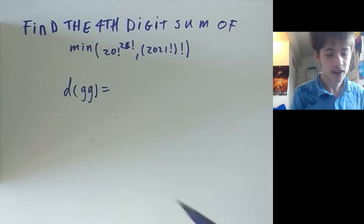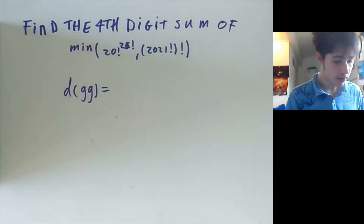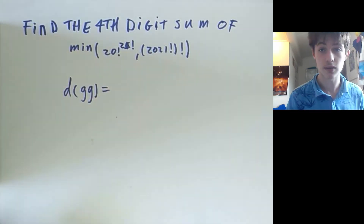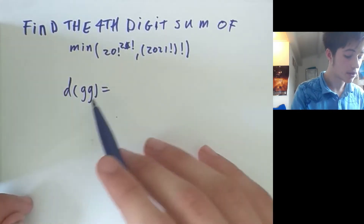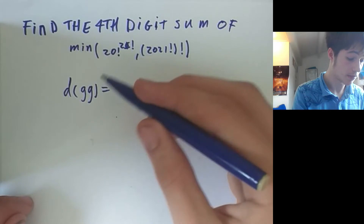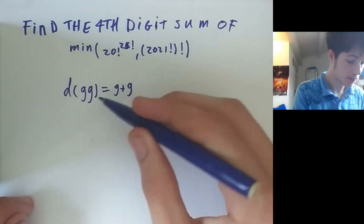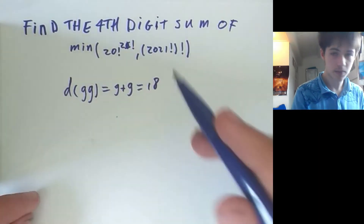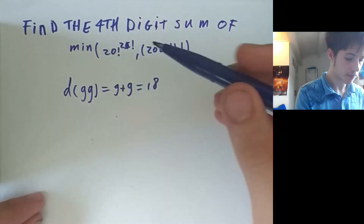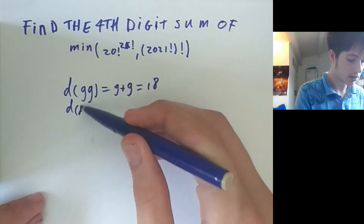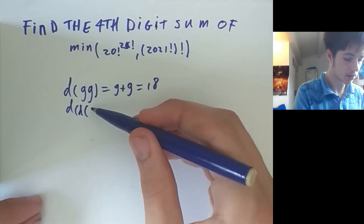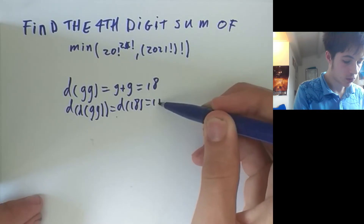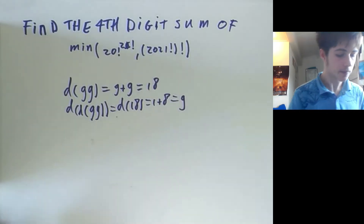Hello everybody. Let me show you how to solve this problem. The problem asks us to find the fourth digit sum of a certain quantity. First, recall what we mean by the digit sum. For example, the digit sum of 99 — working in base 10, we add the digits — 9 plus 9 is 18. Then the second digit sum applies the digit sum operator again: the digit sum of 18 is 1 plus 8, which is 9.